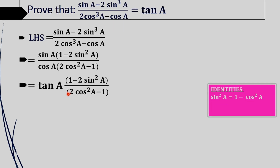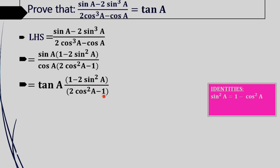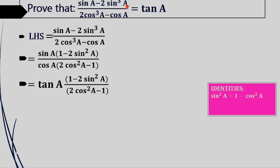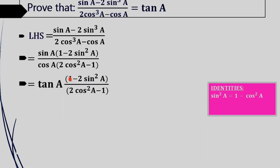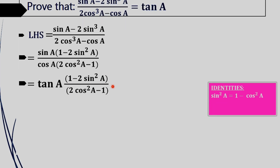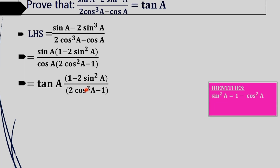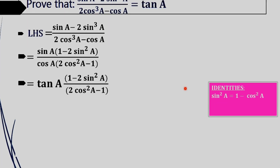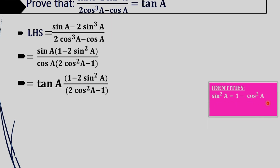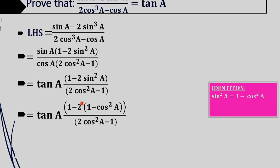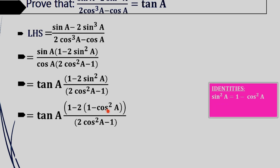So we get our required RHS, that is tan a. On the next step, we have to cancel each and every term except tan a. We have to prove the numerator and denominator equal to 1 in order to get RHS. So what is sin square a? According to the identity, sin square a equals 1 minus cos square a. On rewriting, we get 1 minus 2 into 1 minus cos square a.